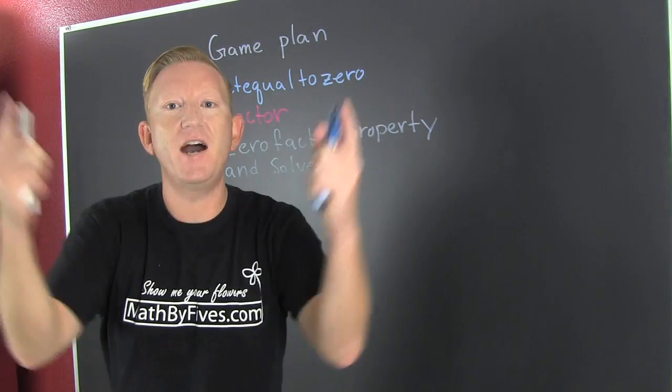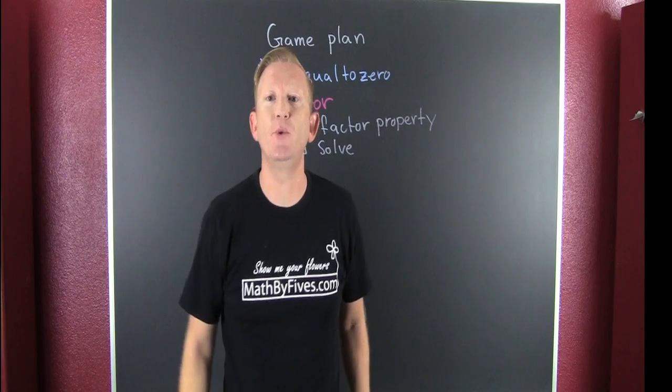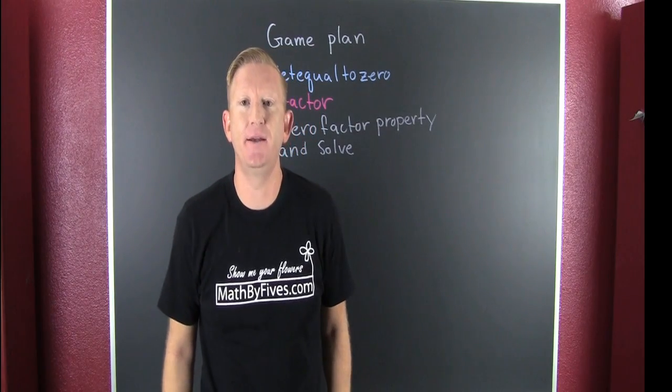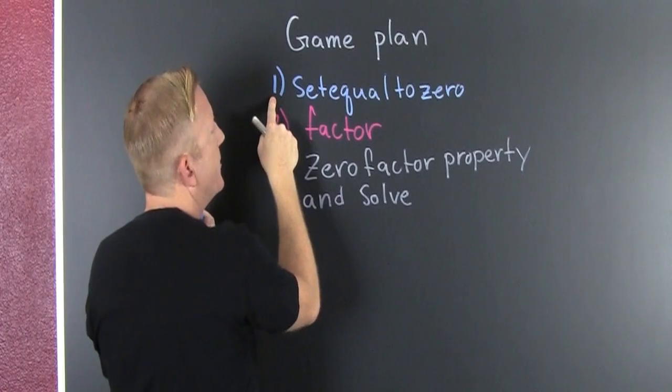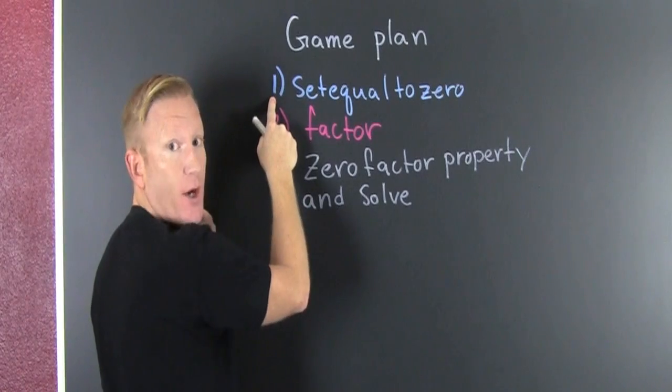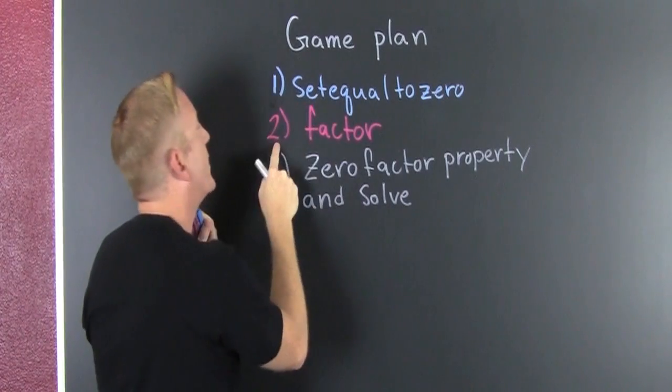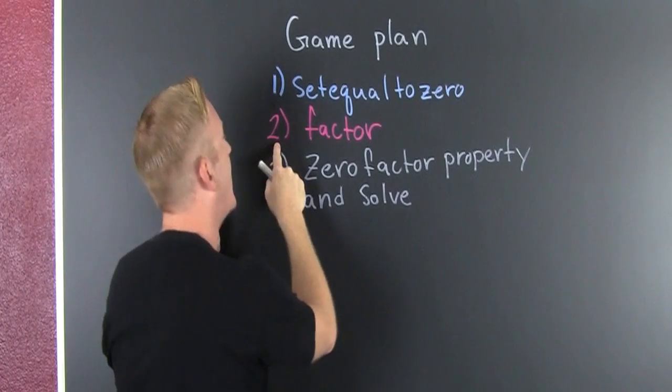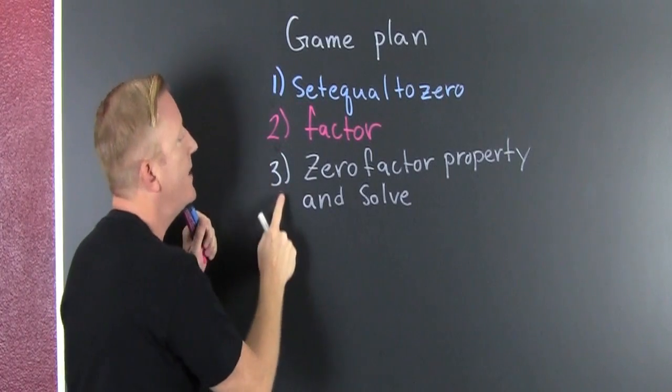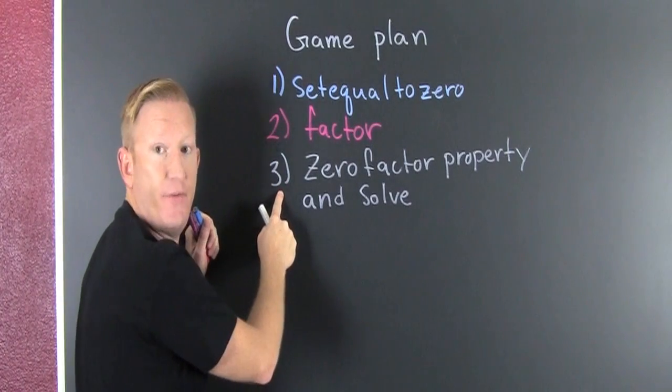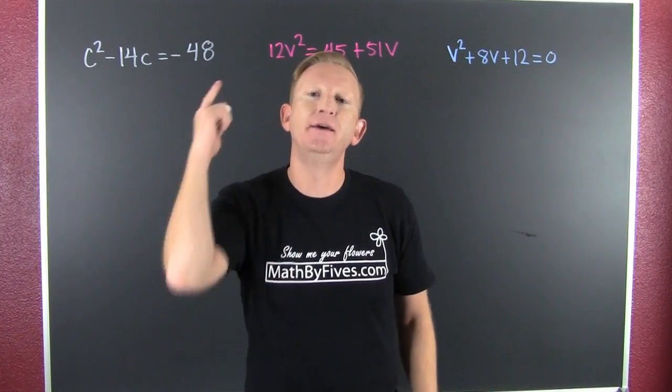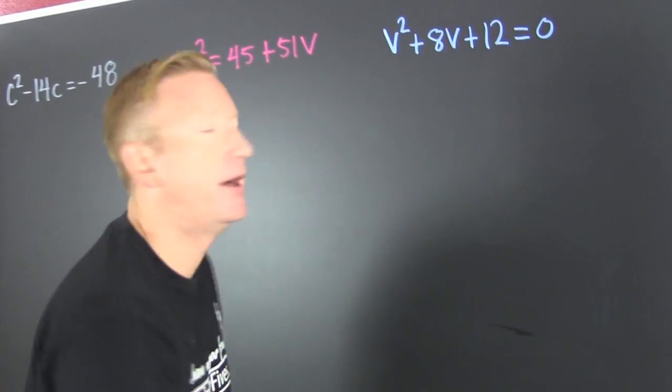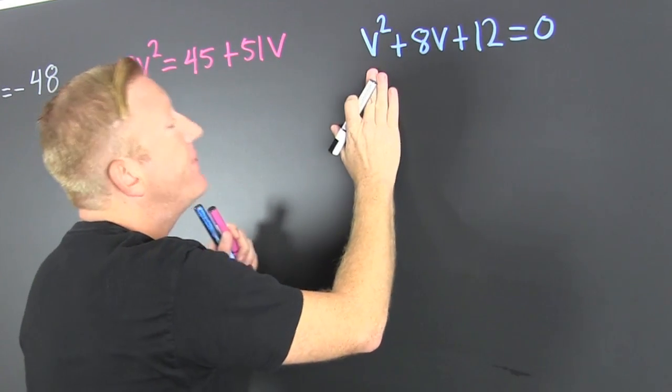Solving quadratics by factoring, but first we need a game plan. First, we're gonna set it equal to zero, the quadratic. Then we're gonna factor. And then the zero factor property and solve. So now that we have that game plan, let's use it.